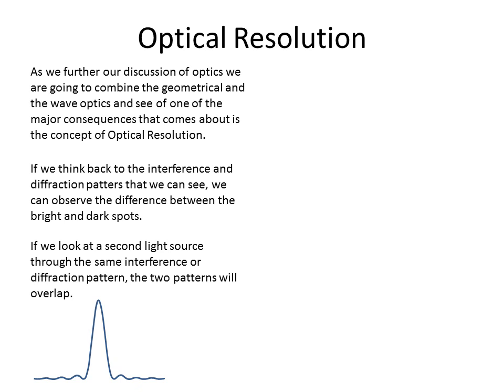If we look at a second source through the same interference or diffraction pattern — so we put a second light bulb on the far side of this screen — we see that the two interference patterns will overlap. The intensity from one interference pattern will be the same, and the second one will produce this new interference pattern. The m equal 1 and m equal minus 1 for the two things are lining up, but it doesn't have to be that way. It can be any variation depending on how far apart they are.